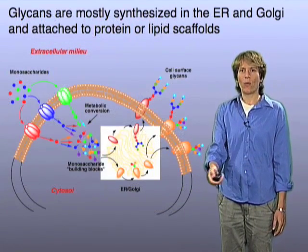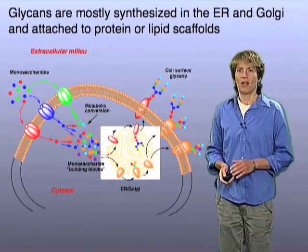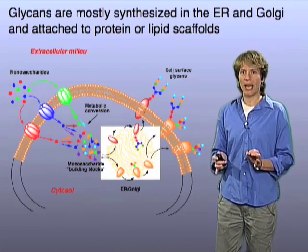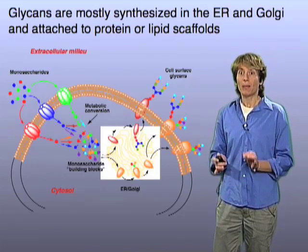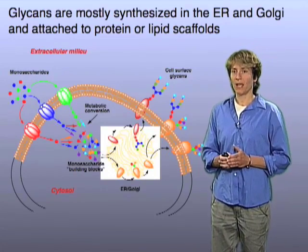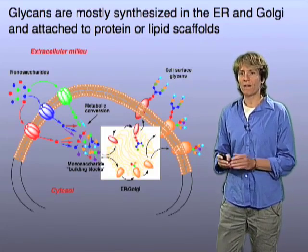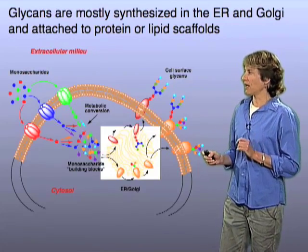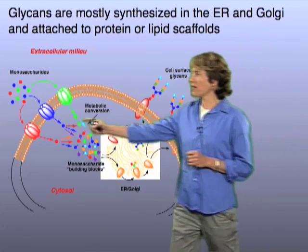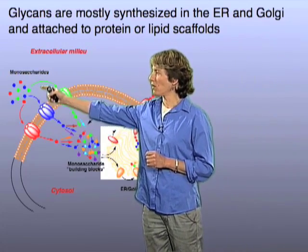Let me tell you a little bit about where these glycans come from inside the cell, because they are the products of fairly complicated metabolic pathways — they're products of metabolism. And all of that begins with the uptake of simple sugars into the cells. These simple sugars we call monosaccharides, and they're denoted by these little colored balls.